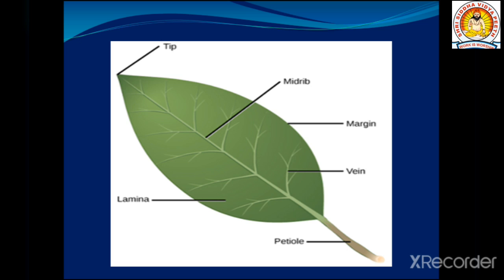Let's look at the picture of the leaf. Here you can see the midrib — the prominent thick line in the center. The leaf also has a margin along its edge. The veins branch out from the midrib on the sides. The lamina is the green expanded portion where photosynthesis is carried out. The petiole is the part attached to the stem, and the tip is the pointed end of the leaf.